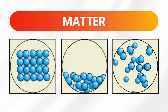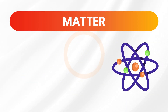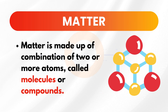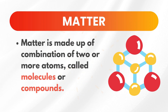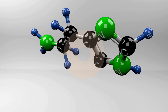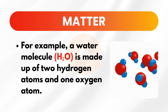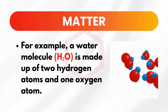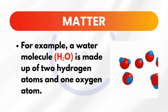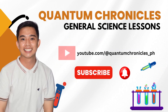Matter is made up of discrete particles called atoms or their combination called molecules or compounds. At the most basic level, matter consists of atoms. These atoms can band together to form molecules. For example, a water molecule or H₂O is made up of two hydrogen atoms and one oxygen atom.